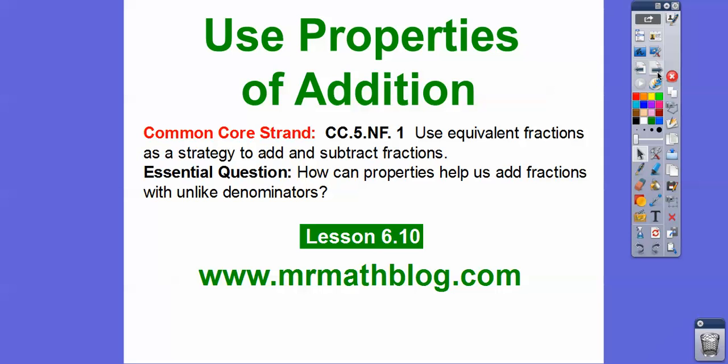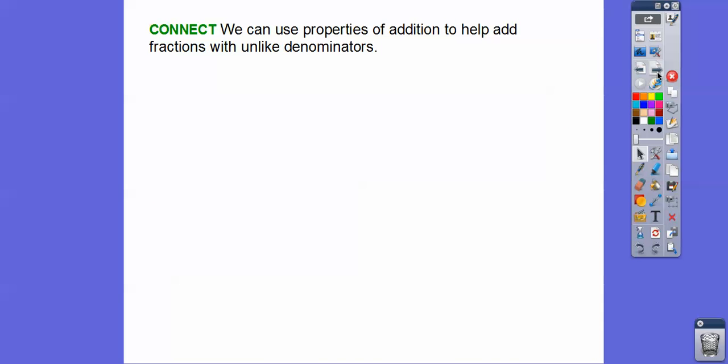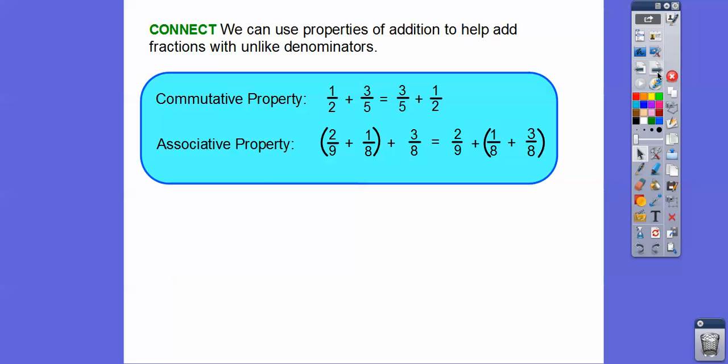Our common core strand question is: how can we use properties to help us add fractions with unlike denominators? So I like this lesson — it's one of my favorites. We can use properties of addition to help add fractions with unlike denominators. We're only adding in this lesson.